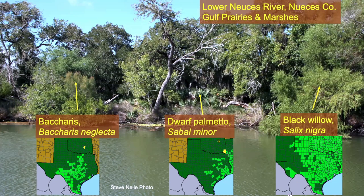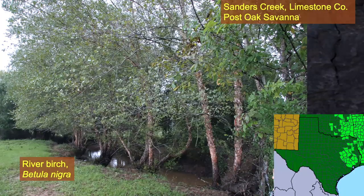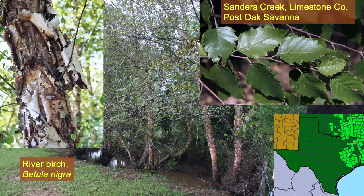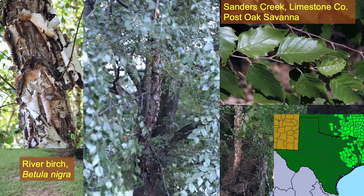Now we're in the post oak savannah, the area between the Piney Woods and the blackland prairie. Notice this plant — river birch — it also occurs in the Piney Woods. Very unique with that peeling bark, very easy to spot from a distance. The leaves have very deeply notched teeth like an old crosscut saw. There's a saying that you can't see the forest for the trees, but if you look in the forest you can see that river birch right there — you've got to look close sometimes.